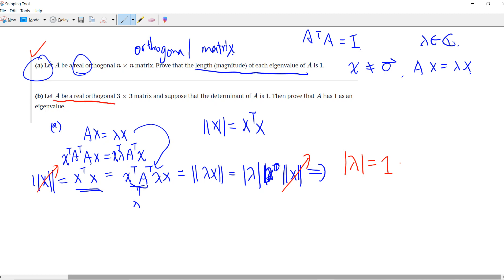Part B is also a very common problem. Let A be a real 3 by 3 matrix with determinant equal to 1. People like to say that A is in SO(3). Then prove that A has 1 as an eigenvalue.